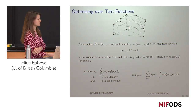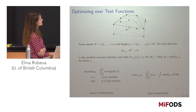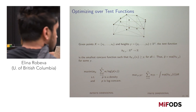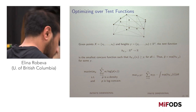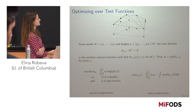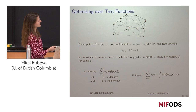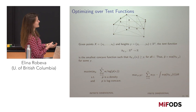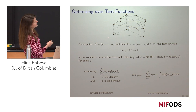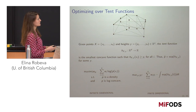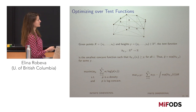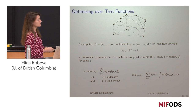A question was raised about whether the problem is truly finite dimensional: h is defined as the smallest concave function at those points, but given heights y, h is piecewise linear on polytopes determined by the upper convex hull of (x, y) in R^{d+1}, so computing h from y is explicit and the optimization is over the finite-dimensional y.